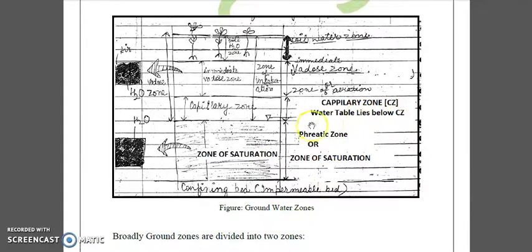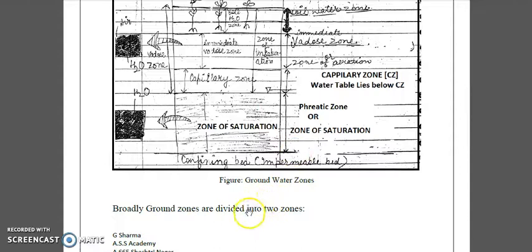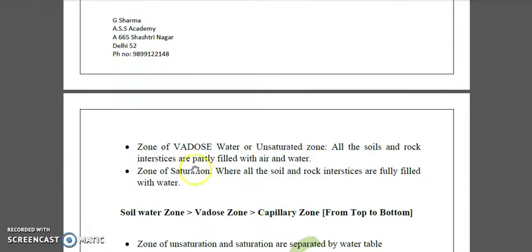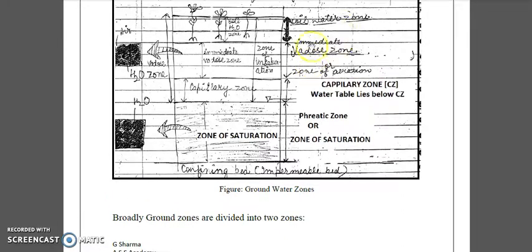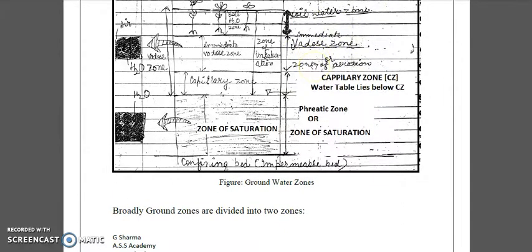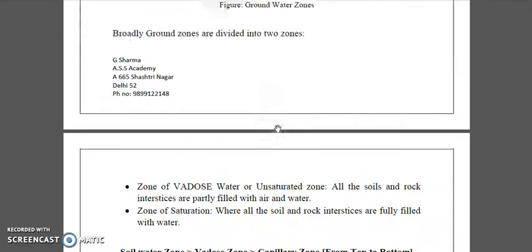At the bottom we have a confined bed or impermeable bed, above which the zone of saturation exists. These groundwater zones are broadly divided into two: the zone of vadose water or unsaturated zone, where all the soil and rock interstices are partly filled with water and partly filled with air.